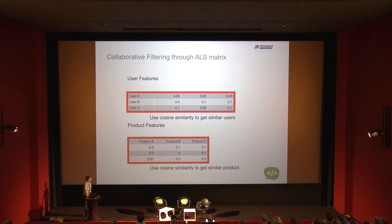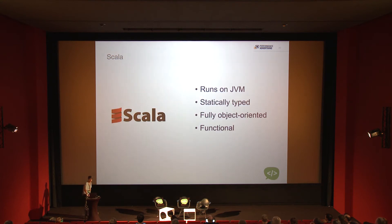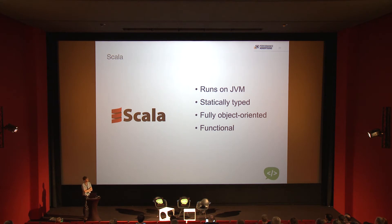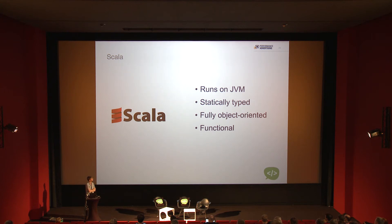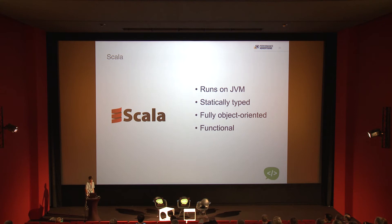Let's have a look at Scala. Most of Prediction.io, which we'll talk about later, is written in Scala. Scala is a programming language that runs on the JVM — anywhere you can run Java, you can also run Scala. Scala is statically typed, similar to Java with strong typing. It's also fully object-oriented, and unlike Java there are no primitives — numbers are objects too.